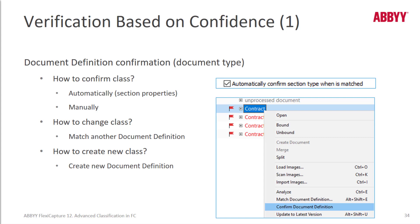If a document definition doesn't have any fields, or fields need to be trained during verification, classification is the way to apply the correct document definition. Verification of classification results is required here, and you can create an additional stage for this purpose.